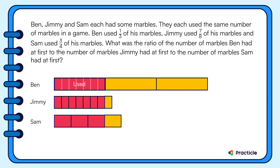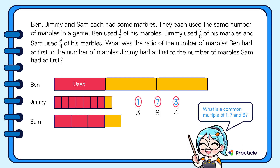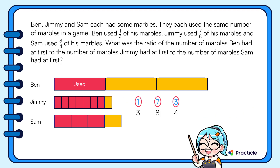Instead, let's use a shortcut. The key of this problem lies in making these units equal. So instead of doing our working on our model, let's just make use of our fractions. The numbers on top correspond to the number of units we want to make equal, so the shortcut is to make the numerators of all these fractions the same. What's a common multiple between 1, 7, and 3? The answer is 21.